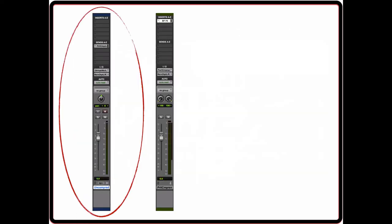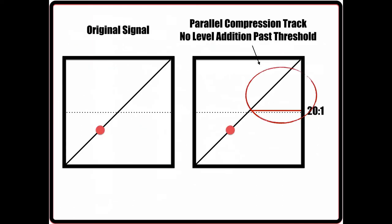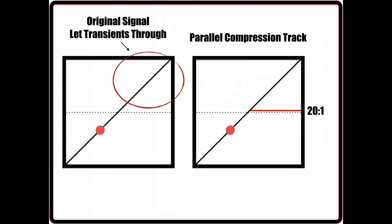For this particular method, it is important to keep the transients of the original signal unprocessed or only slightly compressed. This is because you are already significantly limiting the transients and louder parts of the signal on the compression track. The goal is to only bring up the softest parts of the signal, so by not compressing the original track's dynamics, we allow the loudest parts of the signal to still come through as they are.